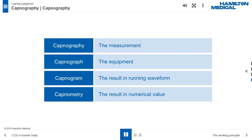Capnography has several terms that may be confusing. Capnography refers to the measurement of the CO2 concentration in respiratory gas. Capnograph refers to the device for capnography. Capnogram refers to the capnography results shown in a waveform. Capnometry refers to the result of capnography in numeric value, for example, ETCO2.